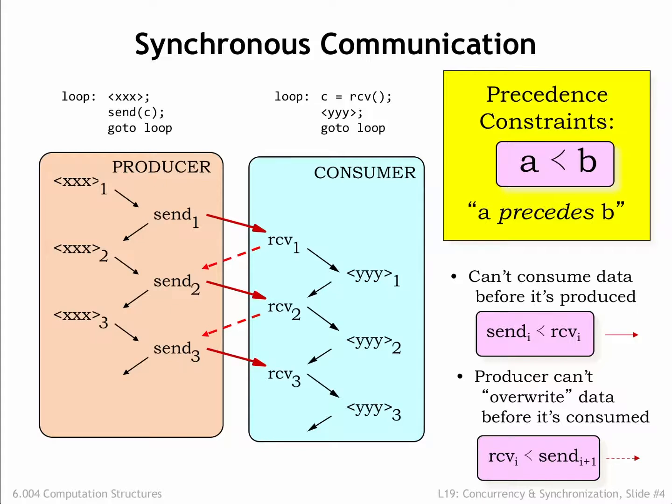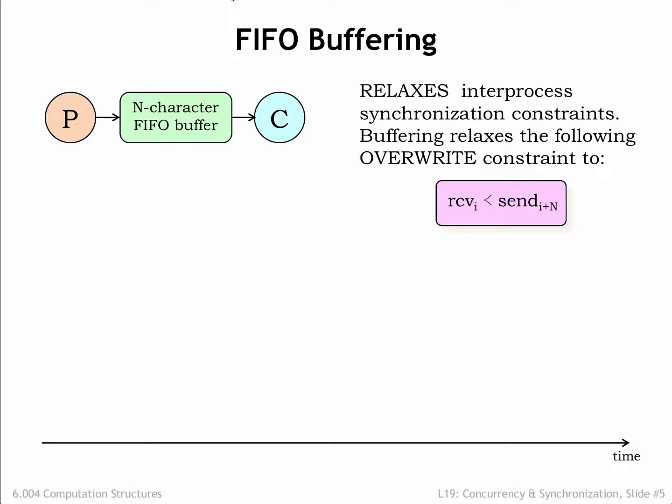So let's see how we can relax the constraints to allow for more independence between the producer and consumer. We can relax the execution constraints by having them communicate via an N-character first-in, first-out (FIFO) buffer. As the producer produces characters, it inserts them into the buffer. The consumer reads characters from the buffer in the same order as they were produced. The buffer can hold between 0 and N characters — if it holds 0 it's empty, if it holds N it's full. The producer should wait if the buffer is full; the consumer should wait if the buffer is empty. Using the N-character FIFO buffer relaxes the overwrite constraint to require that the Ith Receive must happen before the I+Nth Send — in other words, the producer can get up to N characters ahead of the consumer.